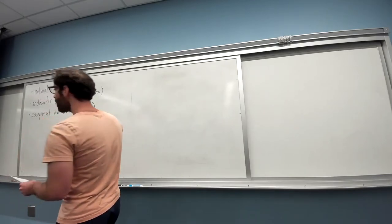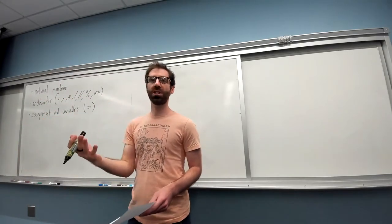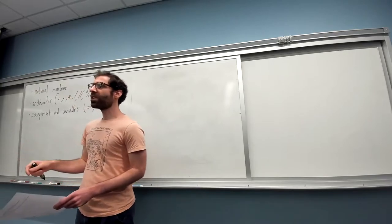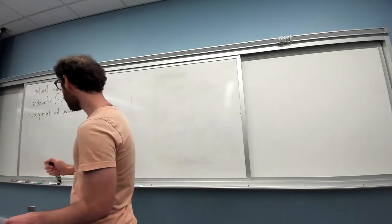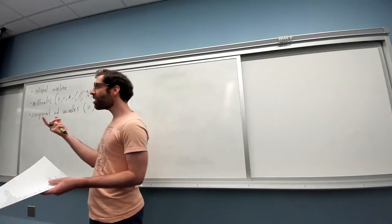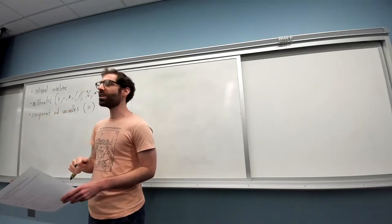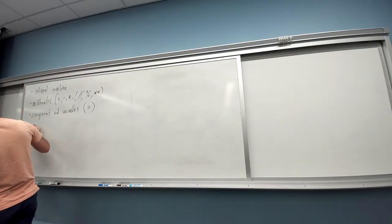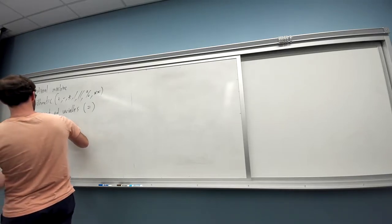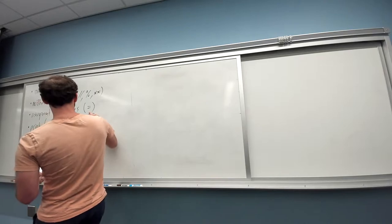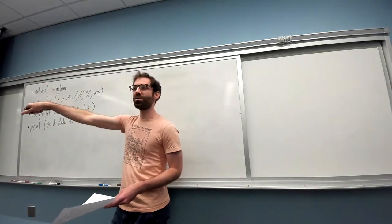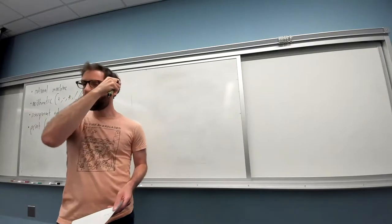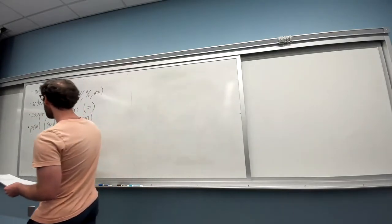We used the single equal sign for our assignment operation. We also talked about rules for variable names: can't start with a number, can't have spaces, only numbers, letters, and underscores. Good coding practice is to give variable names that describe what they're storing — makes it easier to understand what code is doing. In addition to assignment, we could also use print to send data to the screen so we could observe what was going on inside the system.